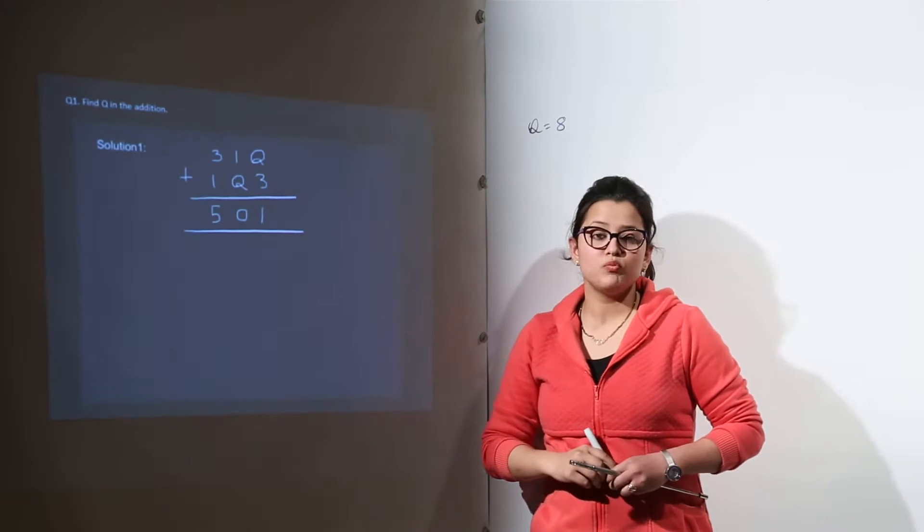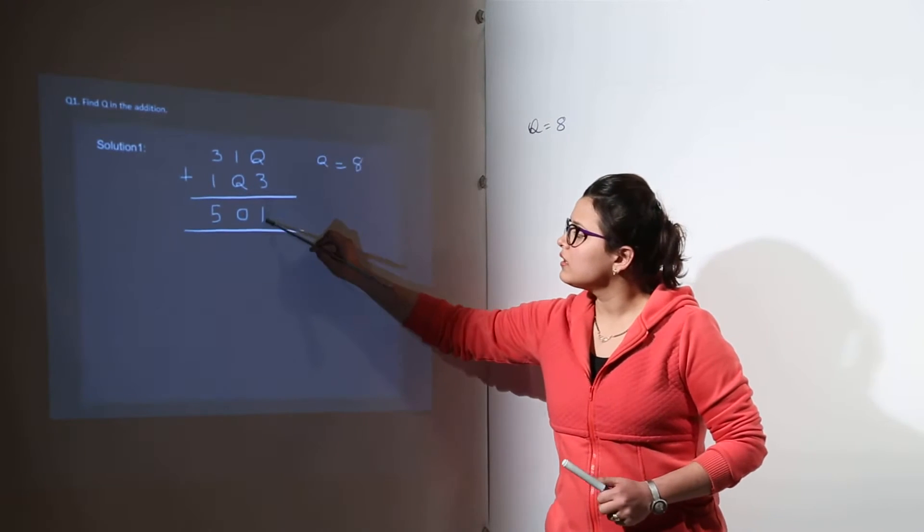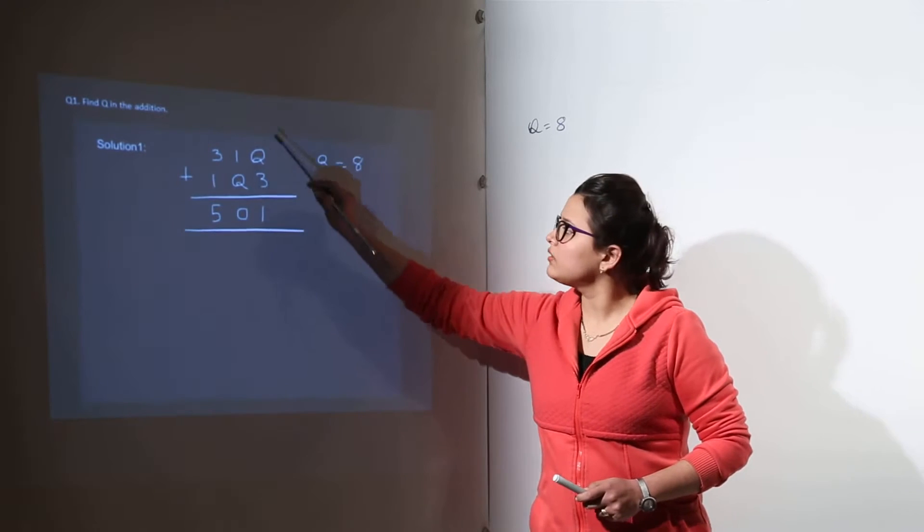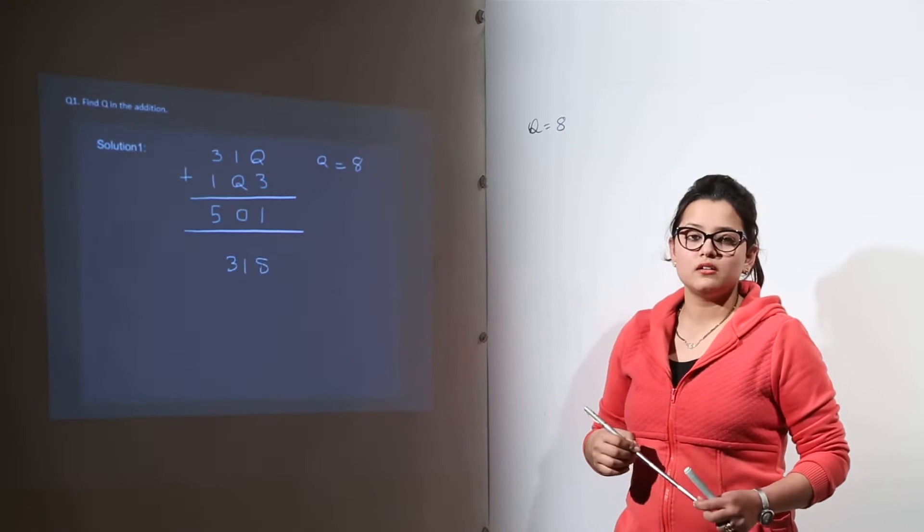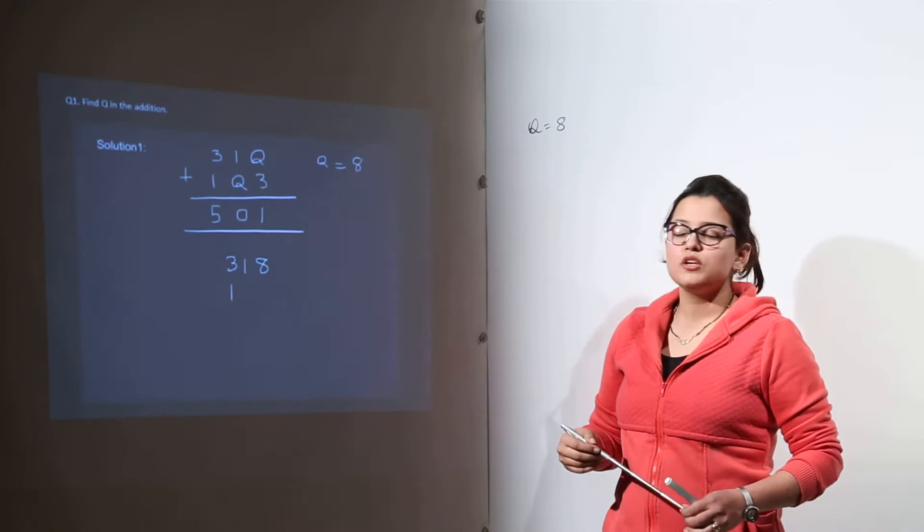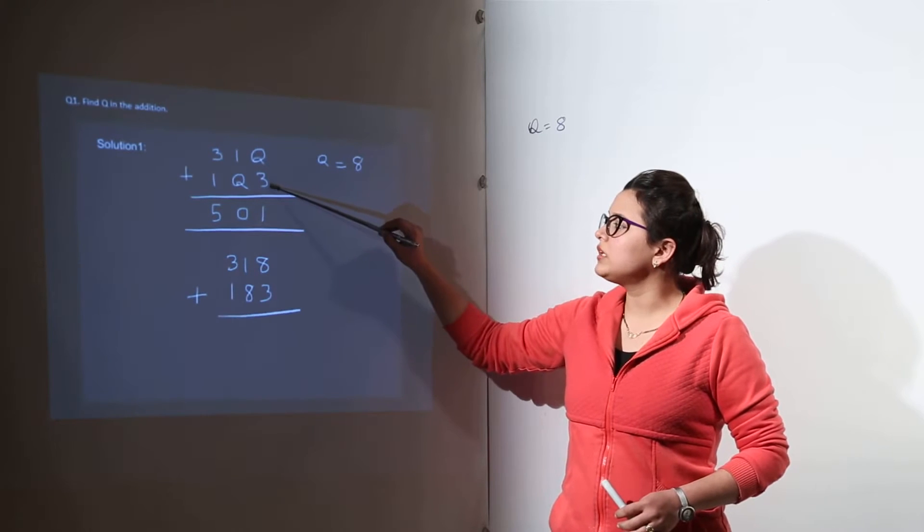Because 8 plus 3 will give me 11, due to which I can get the answer as 1 over here, and 1 will get carried to the next side. If you take any number lesser than 8, that could be 6 or 5, you might not be able to get 1 over here. Like 7 would give you 10, that is 0.